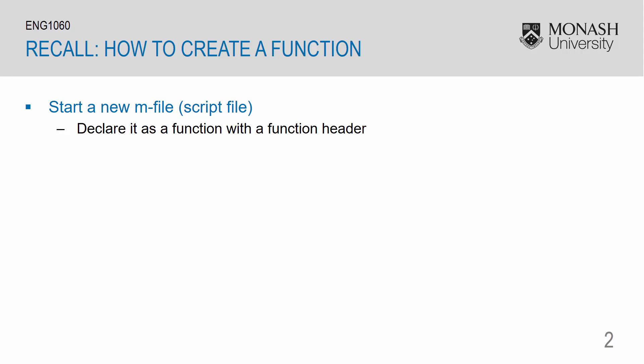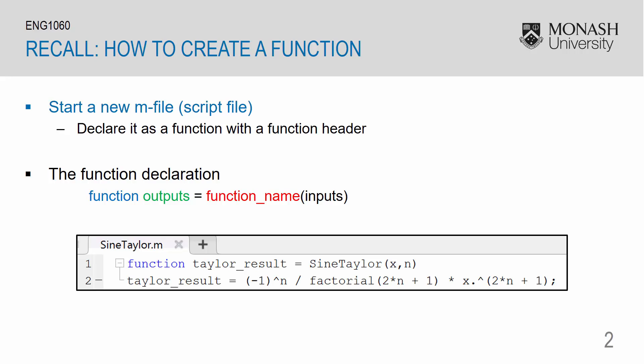Recall that to create a function you must first start a new m-file and declare it as a function with a function header. As an example, we have the word function, followed by TaylorResult, which is our output. Then sinTaylor, which is our function name. And then we have x and n, which are our two inputs.